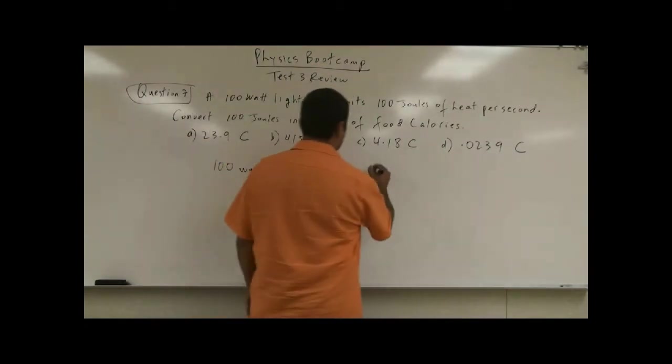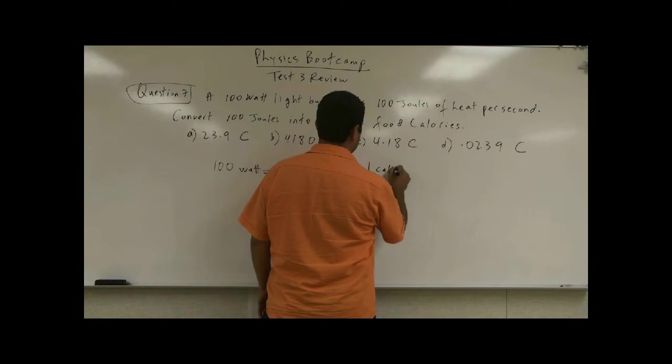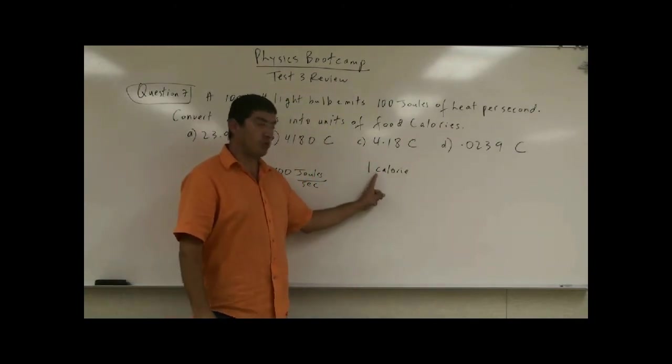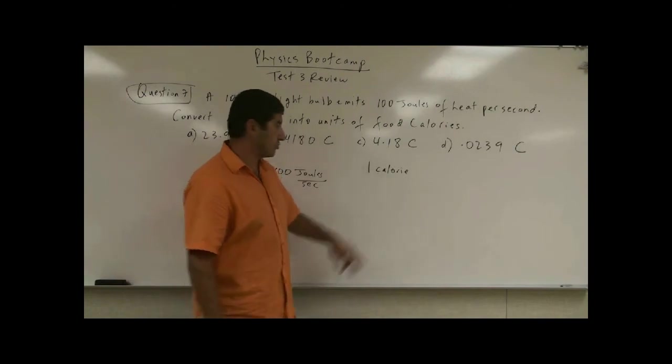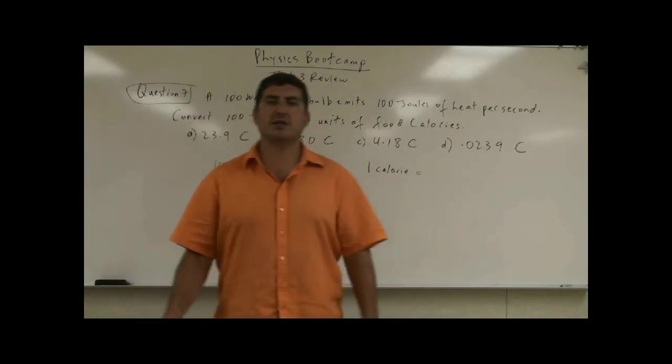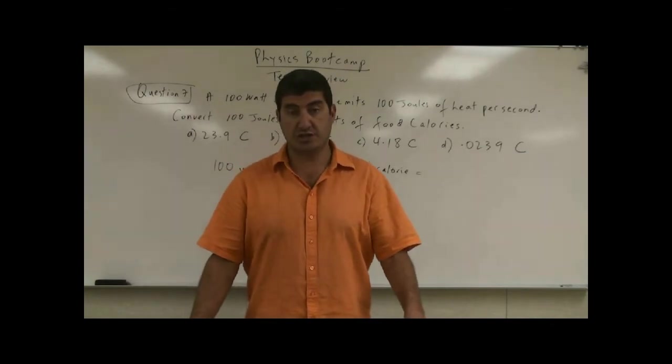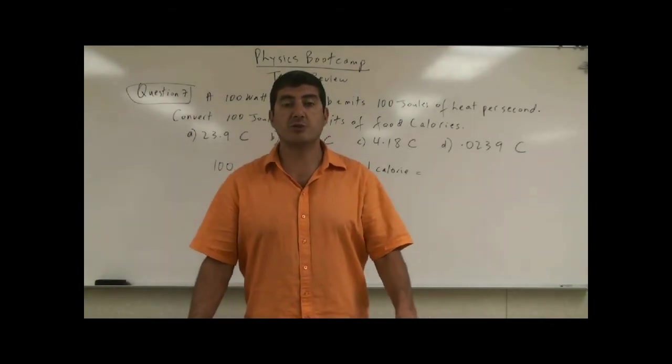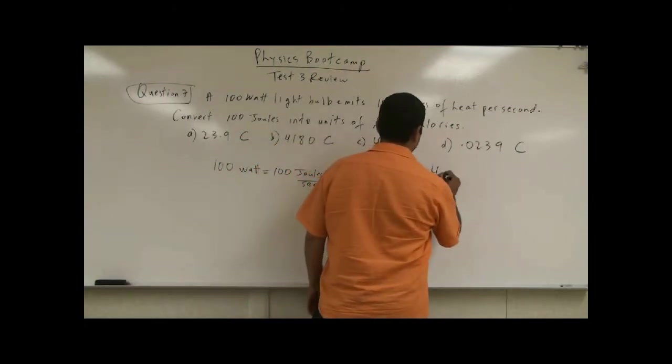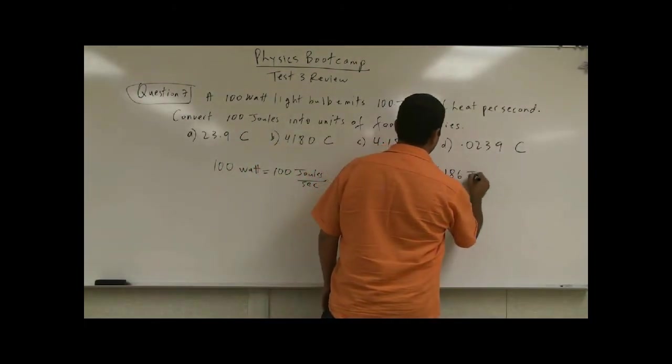So this is the conversion. One regular calorie, we write that usually with a small letter C. One calorie. Usually the calorie is the unit of energy we use for heat energy. So one calorie of heat energy is equivalent to 4.186 joules.